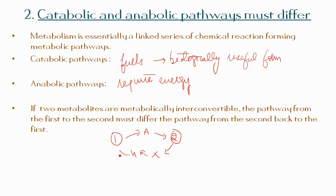The two pathways are different. The pathway one to two is different from the pathway two to one. This is because if metabolite one is converted to metabolite two by an exergonic process, the conversion of metabolite two to metabolite one requires that free energy be supplied.